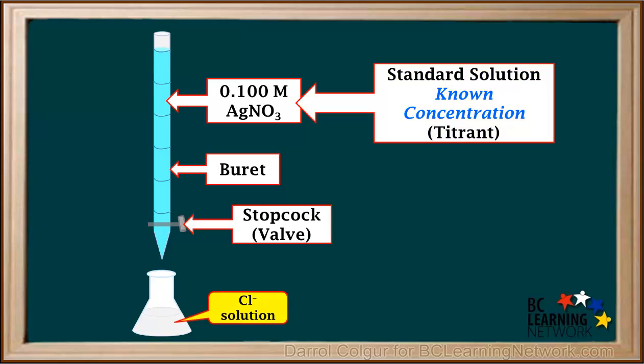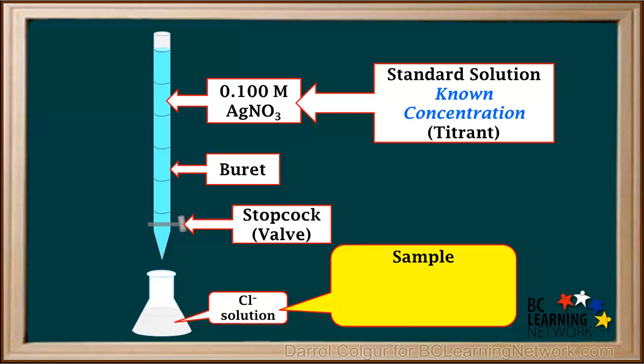a solution containing chloride ions is added to an Erlenmeyer flask and placed under the burette. The solution in the flask is called a sample. It's the solution with the unknown concentration.